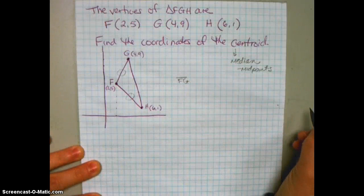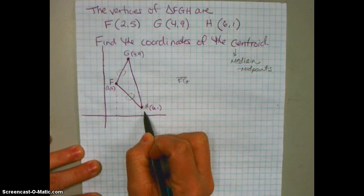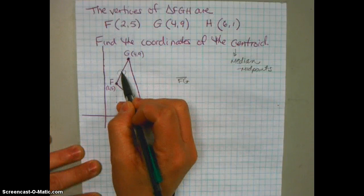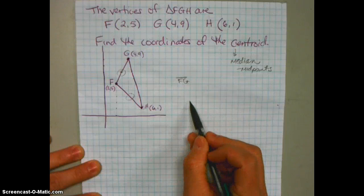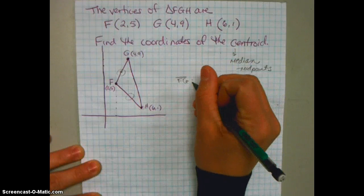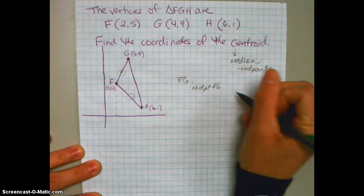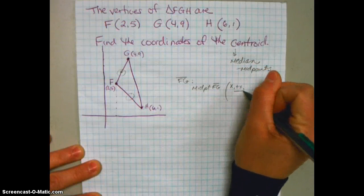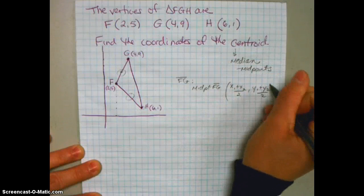Let's look at segment FG first. With segment FG, the median is going to start at vertex H and join with the midpoint of segment FG. So the first thing I need to do is find the midpoint of FG. Remember, the midpoint formula is (X1 + X2)/2, (Y1 + Y2)/2.